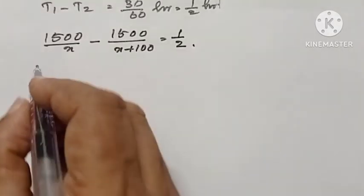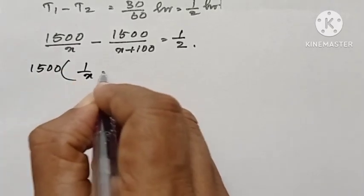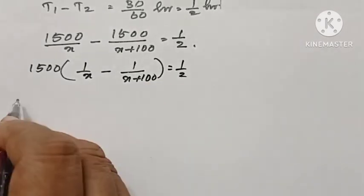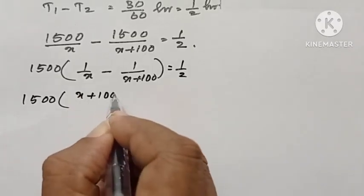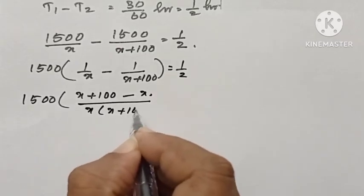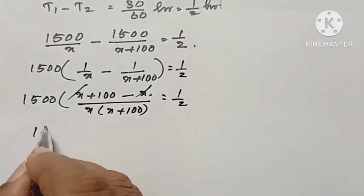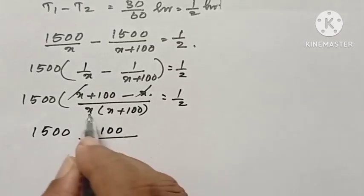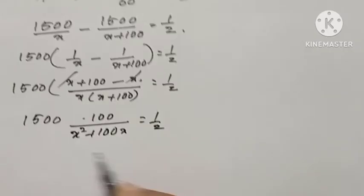Cross multiplying and taking the LCM, 1500 is common, taking it outside. 1 by x minus 1 by x plus 100 equal to 1 by 2. Taking the LCM, x plus 100 minus x divided by x into x plus 100 equal to 1 by 2. Cancelling x, 1500 into 100 divided by x into x plus 100 equal to 1 by 2.